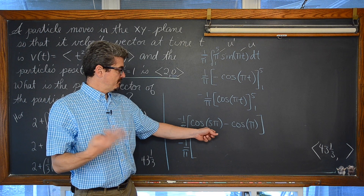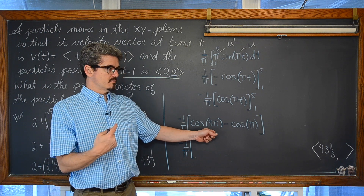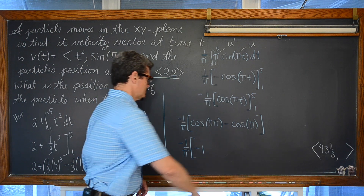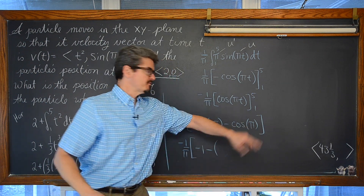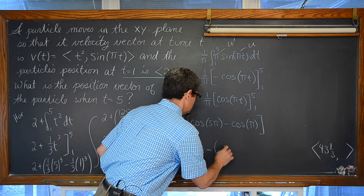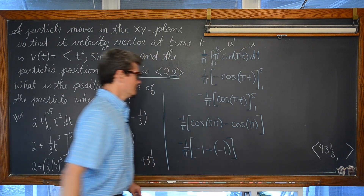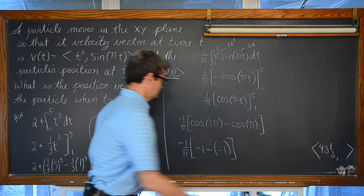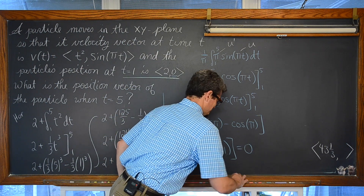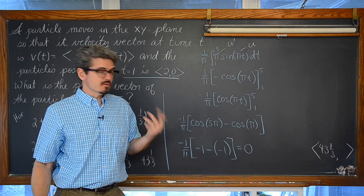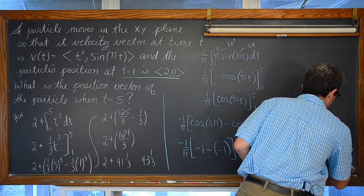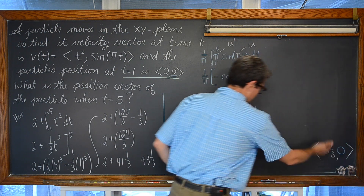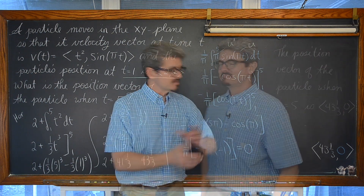The cosine of 5π equals negative 1, and the cosine of π is also negative 1. So we have negative 1 plus 1, which equals 0. Our vertical location is 0.